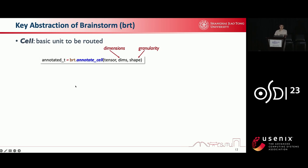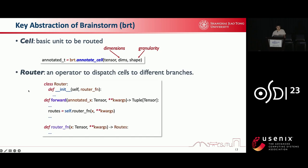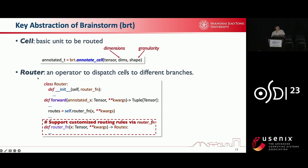The first abstraction is cell. It is the basic unit to be routed. We provide an API to annotate a tensor with the dimensions and shapes. Then, at runtime, Brainstorm can identify the cells as the routing granularity. Furthermore, a router is proposed to dispatch cells inside a single tensor to different branches. Router is a special dynamic neural network operator that can adapt to different dynamic optimizations. Its definition accepts a router function to support customized routing rules, for example top-1. The output of the router function is simply a tensor called routes, which specifies the destination for each cell.